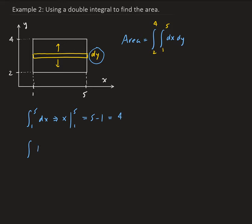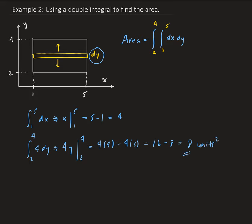Now we're going to take the integral of four dy and integrate that with respect to y from two to four. So that's going to give us four y, and we evaluate that from two to four. That's going to give us four times four minus four times two, which is 16 minus eight, giving us eight. If this were an application problem, this would be in units squared.